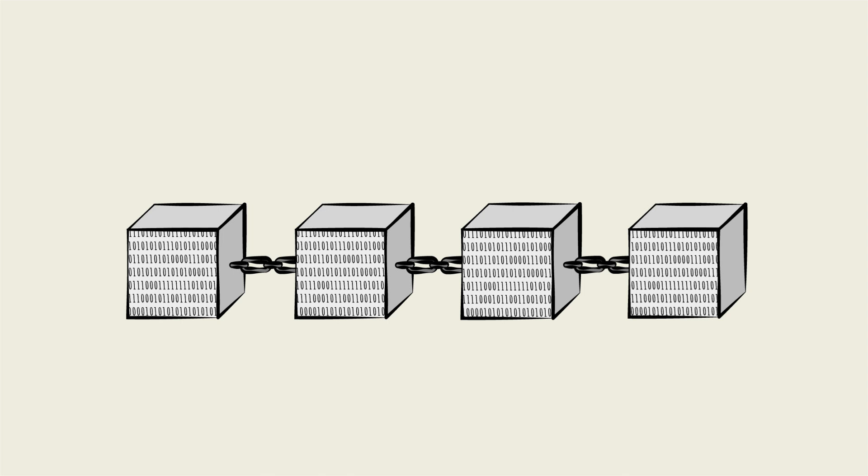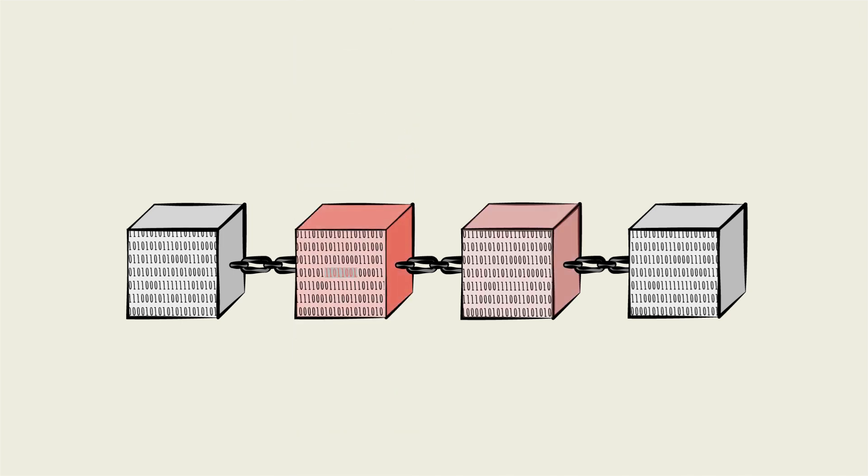Each block is designed so that any changes in the data will break the entire chain, raising alarm bells. Here's how this works. Consider any two blocks on this particular chain, block N and block N plus 1.